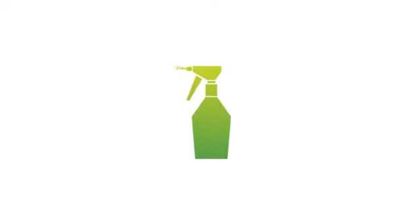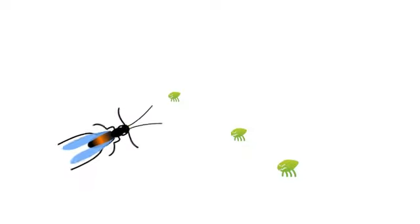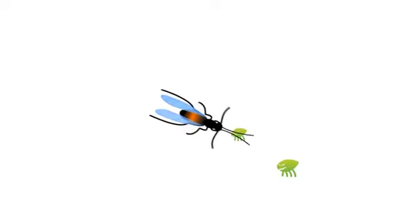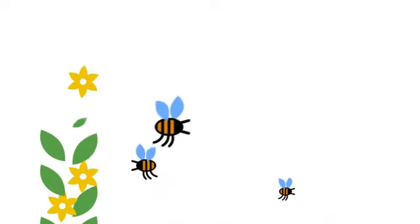Nowadays, crop protection products are hardly ever used in greenhouses. Any harmful insects are controlled by releasing predatory mites or predatory wasps into the crops, so they can eat all the harmful pests. Bumblebees fly around the greenhouses to pollinate the flowers, so that the tomatoes can grow.